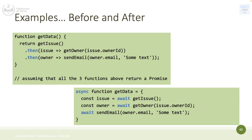To handle promises, if something returns a promise like `getIssue`, you use the `.then()` function — what happens when the promise is fulfilled — and `.catch()` to handle any errors. Promises can also be chained, so one `.then()` leads to another. For example, `getOwner` is chained to `sendEmail`. The equivalent with async/await is the same code, slightly shorter, written in a synchronous style but behaving asynchronously.